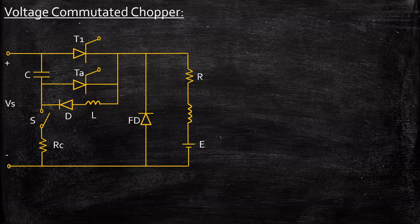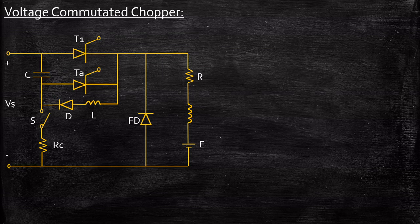In case of a thyristor being used in AC circuits, the supply voltage goes negative, and due to natural commutation T1 turns off — as we have seen in rectifiers. But since here it's a constant DC power supply, we need an external method for T1 to be turned off. That is why this circuit is particularly used. It is called a voltage commutated chopper because we are going to turn off T1 by building up a voltage across capacitor C. TA is an auxiliary thyristor, D is a diode, and L is connected in a particular way — all aiding the need for turning off thyristor T1.